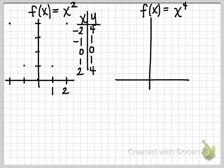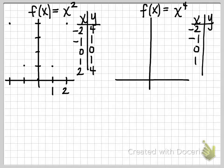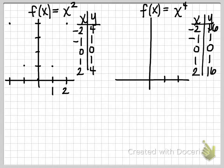Now I'd like to go over to y equals x to the fourth and analyze this function numerically so we can look at the similarities and differences, starting from negative 2 to 2. When we take negative 2 raised to the fourth power, that's going to give us a much larger y value of 16. Negative 1 to the fourth is positive 1. I'll plot those points, again going every other tick mark to zoom in near the origin.